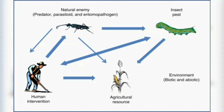Assalamualaikum and welcome to my channel, We Educators. Today you are going to study about biological control. Biological control is the use of living organisms to suppress pest populations, making them less damaging than they would otherwise be.